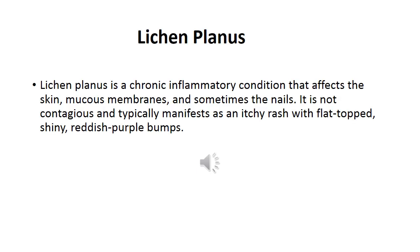What is lichen planus? It is a chronic inflammatory condition that affects the skin, mucous membrane and sometimes the nails. It is not contagious and typically manifests as an itchy rash with flat-topped, shiny reddish-purple bumps.